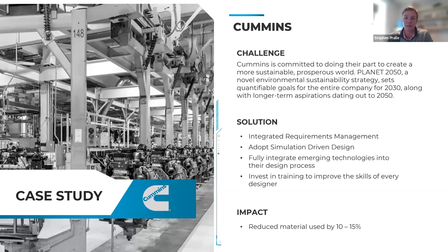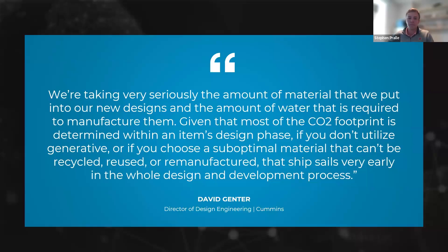In this case study, Cummins, a PTC customer, challenged themselves to create a more sustainable and more prosperous world. They set quantifiable goals for the entire company for 2030 as well as longer term aspirations out to 2050. They integrated requirements management, adopted simulation-driven design, and fully integrated emerging technologies into their design process — and were able to reduce the total material they use by 10 to 15 percent. David Genter, Director of Design Engineering at Cummins, said: 'Given that most of the CO2 footprint is determined within an item's design phase, if you don't utilize generative design or choose a suboptimal material that can't be recycled, reused, or remanufactured, that ship sails very early in the whole design and development process.'